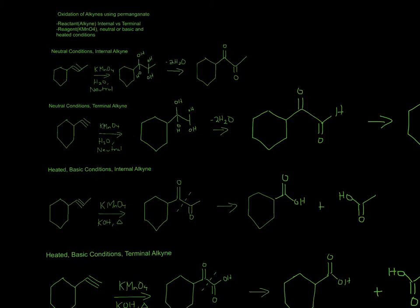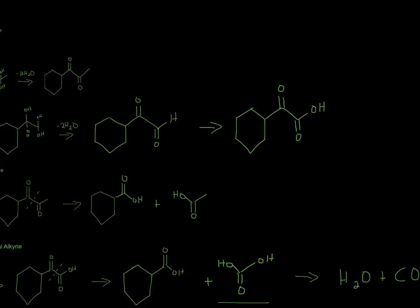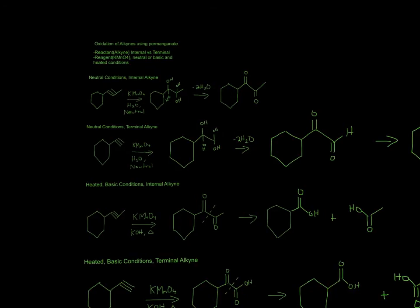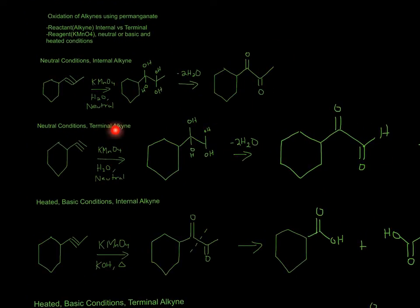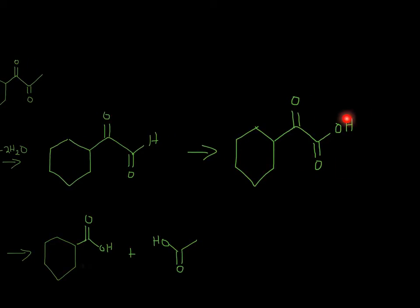Since the terminal alkyne gives a compound with a hydrogen attached, the final compound looks different. Whenever you have an aldehyde — where oxygen is double-bonded to a carbon bearing a hydrogen — you must convert it to a carboxylic acid. All that means is adding an oxygen, giving you a carboxylic acid. So the only extra step for a terminal alkyne is converting that aldehyde to a carboxylic acid.